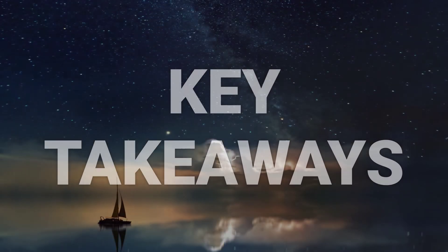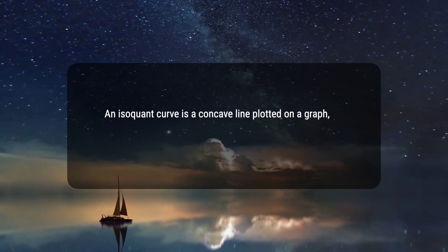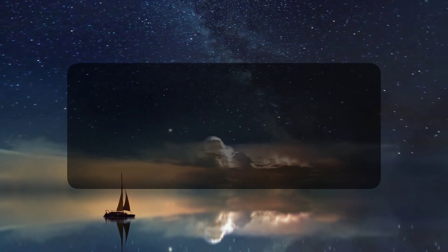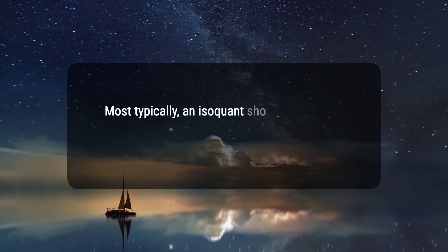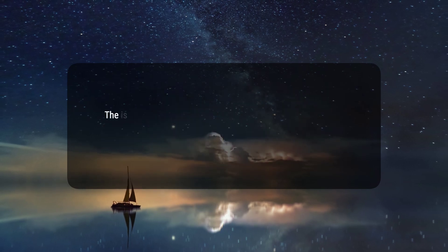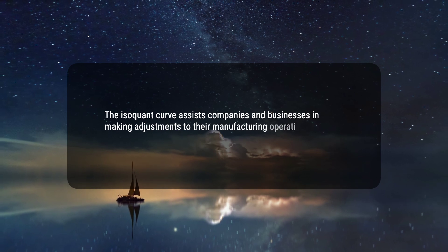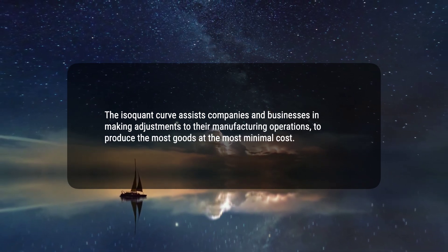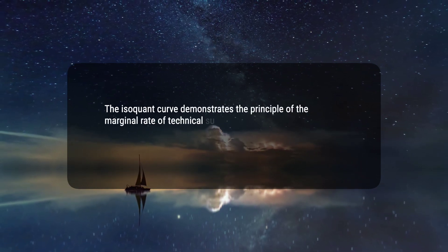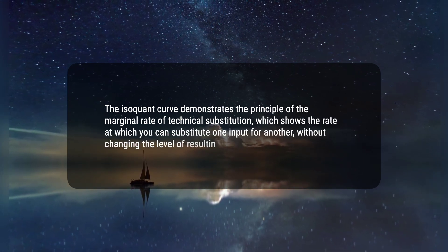Here are five key takeaways. 1. An Isoquant curve is a concave line plotted on a graph, showing all of the various combinations of two inputs that result in the same amount of output. 2. Most typically, an Isoquant shows combinations of capital and labor and the technological trade-off between the two. 3. The Isoquant curve assists companies and businesses in making adjustments to their manufacturing operations, to produce the most goods at the most minimal cost. 4. The Isoquant curve demonstrates the principle of the marginal rate of technical substitution, which shows the rate at which you can substitute one input for another, without changing the level of resulting output.